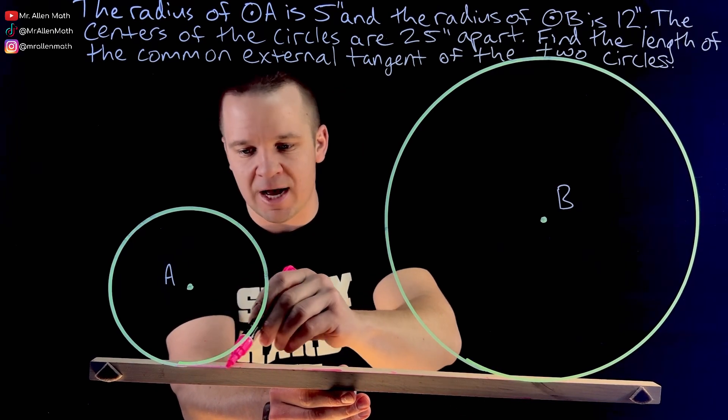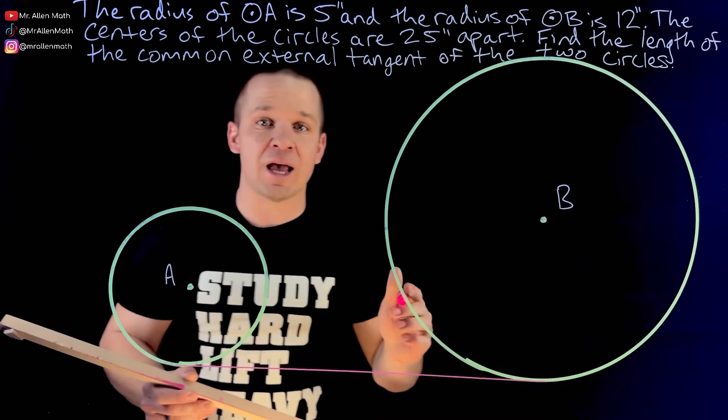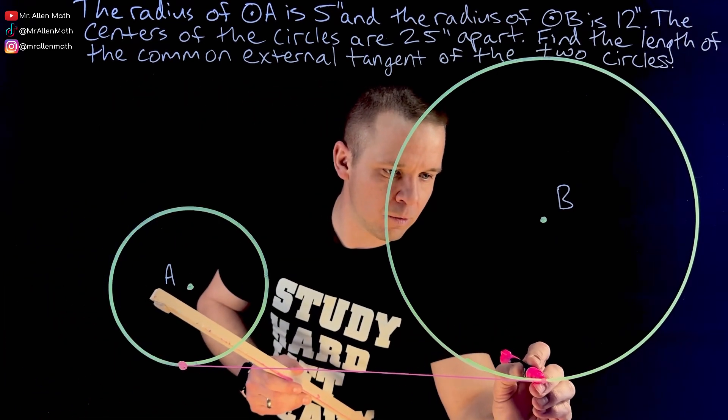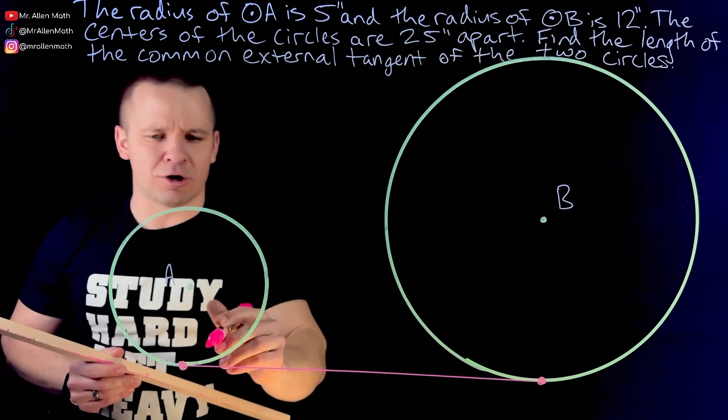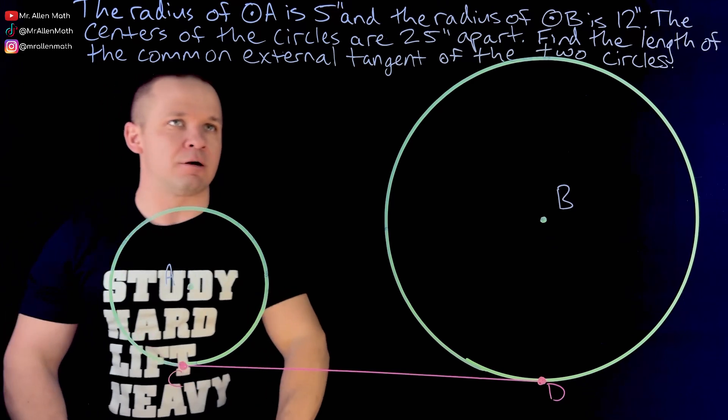This is a common external tangent. It's tangent to both circle A and circle B. So I'm going to make this point right here and I'll make another point right over here. Okay, so that's the length that I want right there. I'll call it C and point D so that way we can call them out in the video if needed.